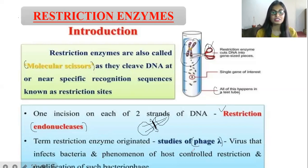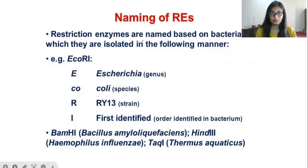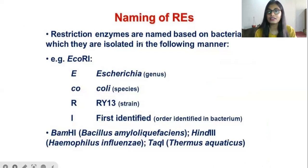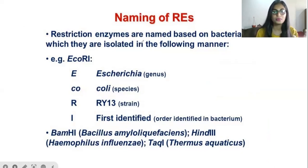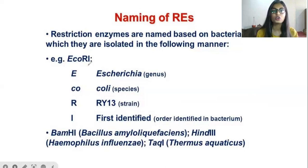Now the nomenclature — how restriction enzymes are named. These restriction enzymes are named based on the bacteria from which they are isolated. For example, one restriction enzyme is EcoR1. How does this name come? The letter 'E' represents the genus of the bacteria — for example, E. coli means Escherichia coli, so 'E' represents the genus.